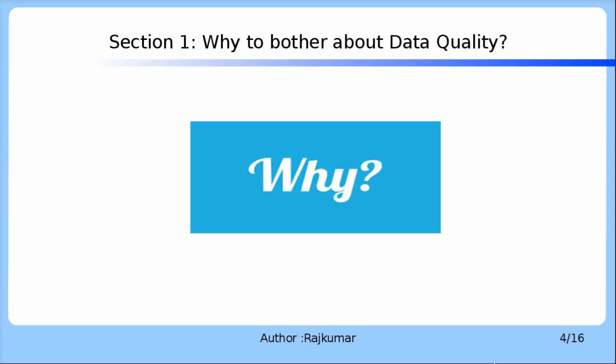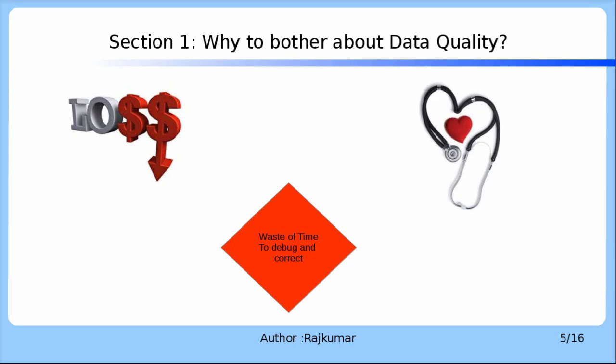If you have the question of why data quality is so important and why you should even bother about it, here are some potential examples of what could happen when quality data is not ensured. Any financial organization or legal corporate not adhering to data quality rules or data governance could easily face a loss in terms of millions or even billions when a fatal data quality issue occurs. Any small data quality issue in the health domain could cost a patient's life. From personal industry experience, developers spend quite a lot of time correcting data sets when data quality is not ensured at the early stage of a project.